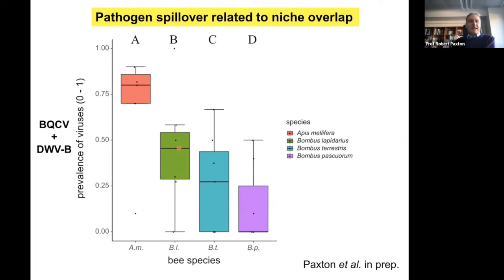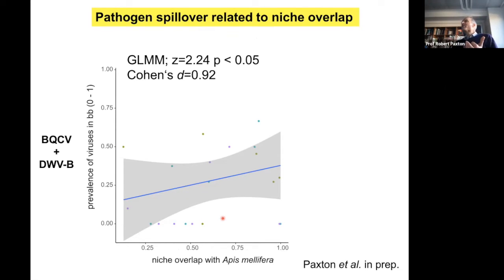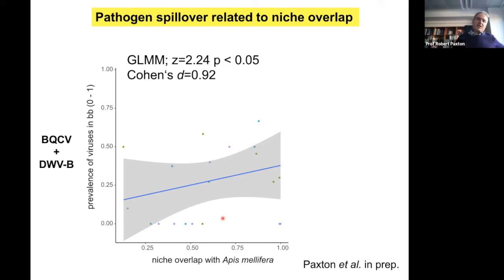The pattern of prevalence in the three bumblebee species reflects the pattern of resource overlap with the honeybee, suggesting it is indeed at flowers where bumblebees are picking up virus. Where a bumblebee has little resource overlap with the honeybee — Bombus pascuorum — it does not have much virus. Bombus lapidarius shares a lot of resources with the honeybee and has more virus. Extending to 14 sites we get the same pattern: if honeybees are heavily infected and visiting a flower species, and a bumblebee also visits those flowers, it too will be heavily infected. More independent evidence that directionality is honeybee-to-bumblebee at flowers.